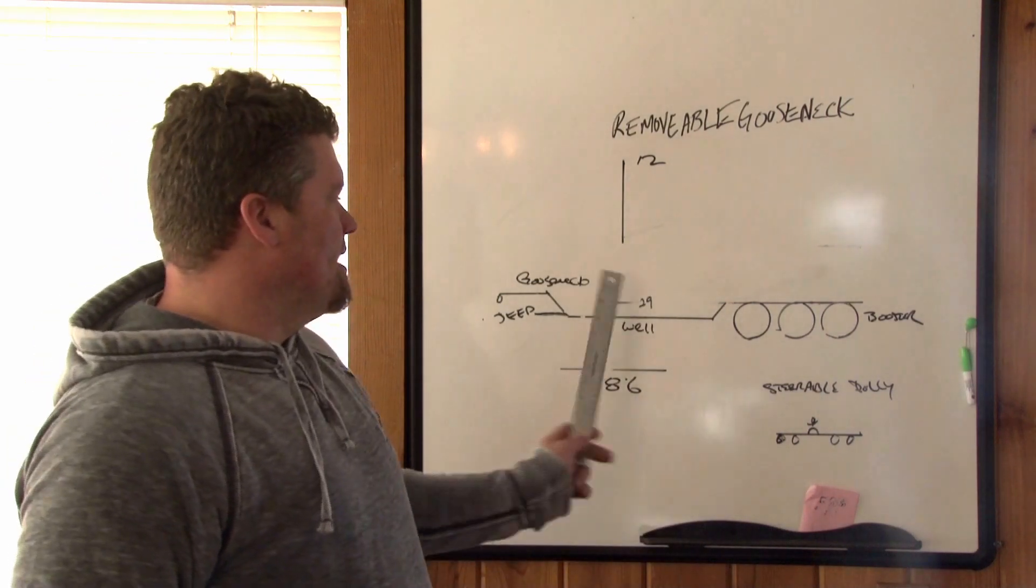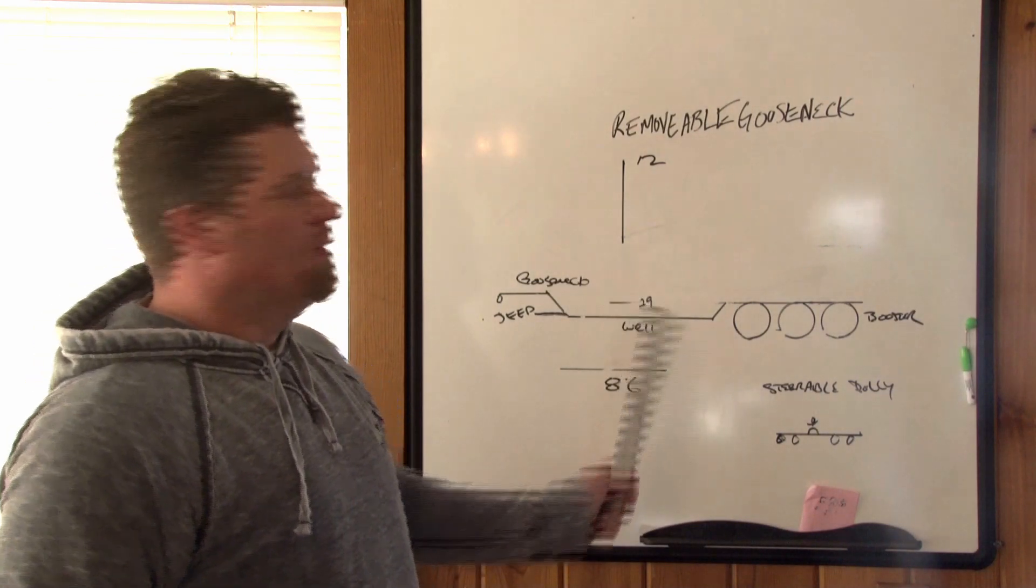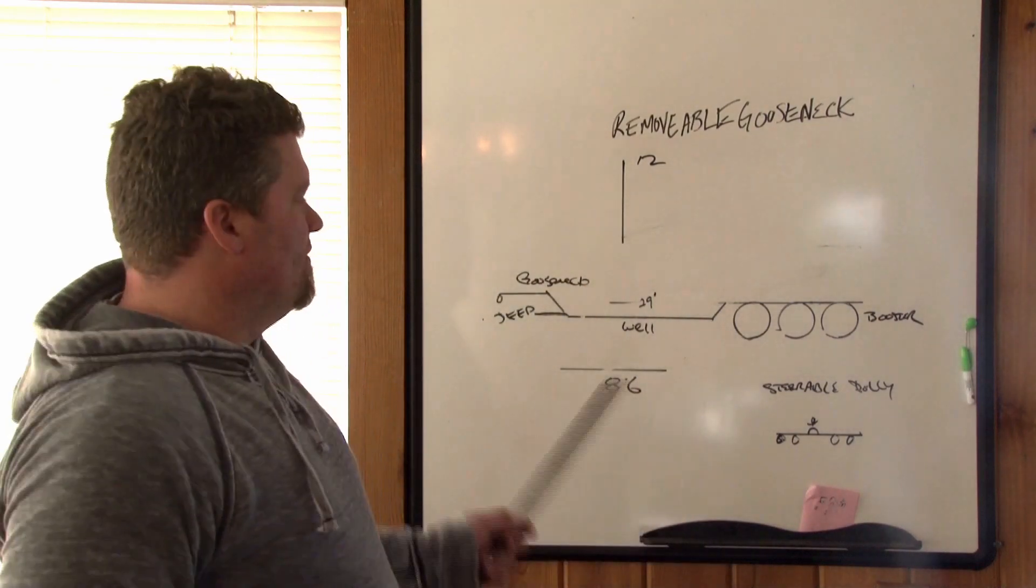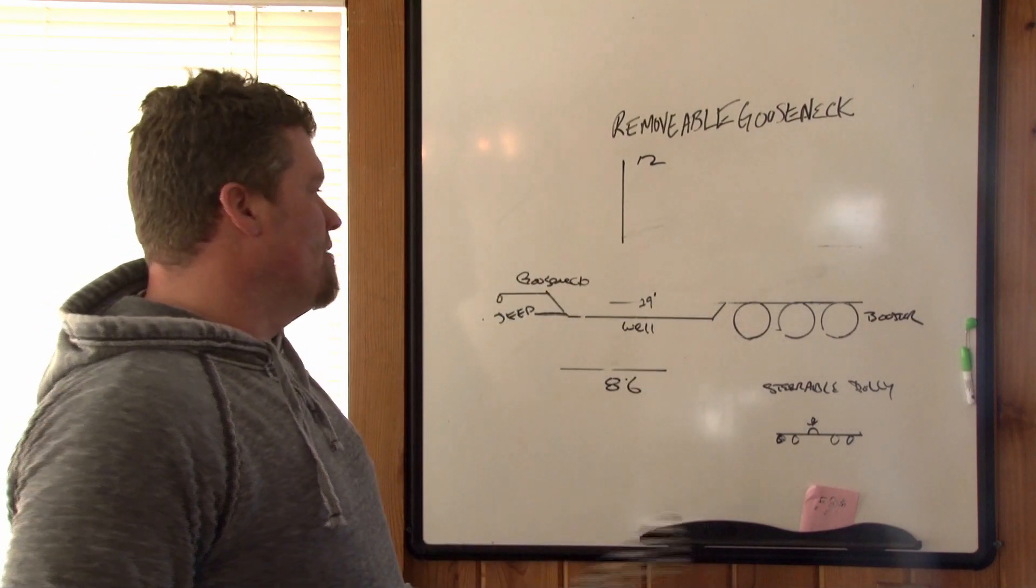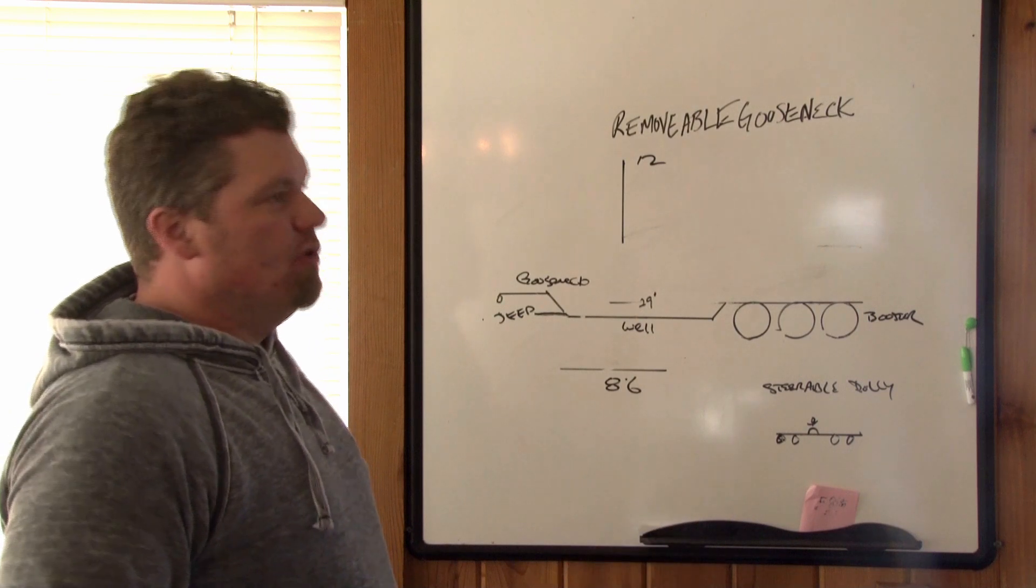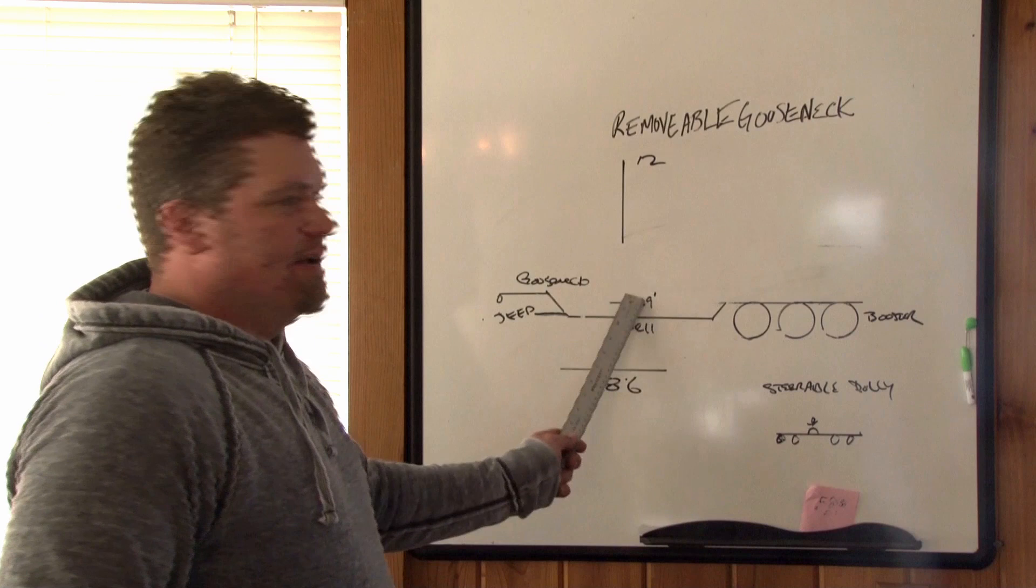An RGN usually has 29 feet in the well, unless it's an extendable. Standard is 29 feet. If you need to get any piece of machinery or anything and you're wondering how much well you have, it's 29 feet.